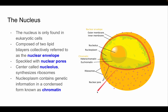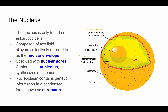Nuclear pores are one of the ways large proteins and messenger RNAs can exit the nucleus. The center is called the nucleolus, and that's the site of ribosome production or synthesis. The fluid inside the nucleus is called nucleoplasm, and it contains genetic information in a condensed form known as chromatin, which you can sometimes see stained under a microscope.